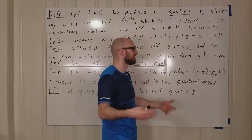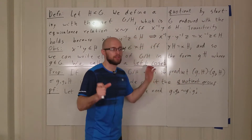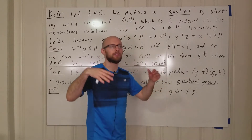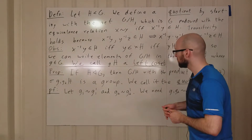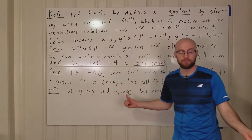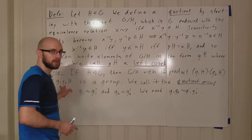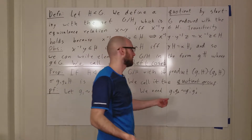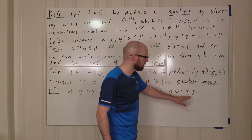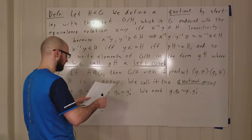Whenever we take two elements of G mod H we're taking two elements of cosets, and we need to make a choice of which elements of these cosets we're going to use, and show it doesn't matter which ones we pick. So if we use g1 and g2, and instead choose g1 prime and g2 prime as our coset representatives, we need to prove that g1g2H is the same coset as g1 prime g2 prime H — i.e., we need to prove that g1g2 is equivalent to g1 prime g2 prime.